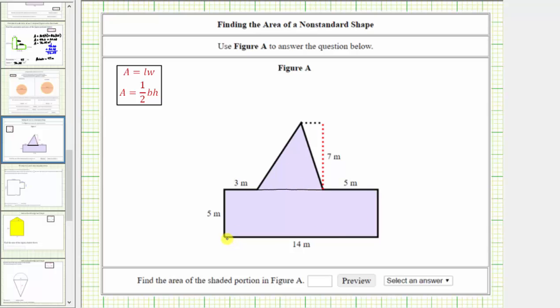Notice how this side has a length of 14 meters. This length must be the same as 3 meters plus the length of the base of the triangle plus 5 meters. Therefore, the base of the triangle has a length of 14 meters minus 3 meters minus 5 meters, which is 6 meters.